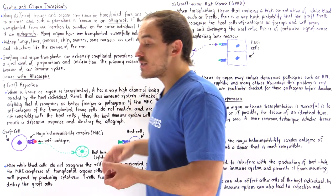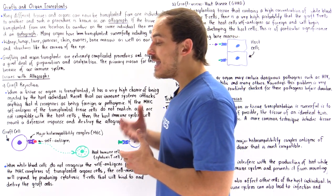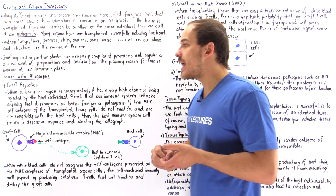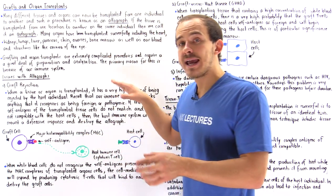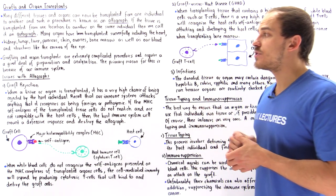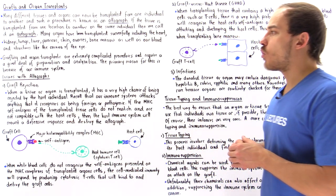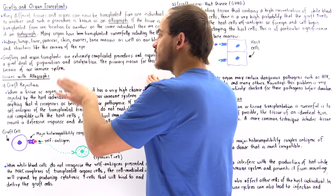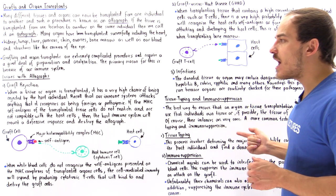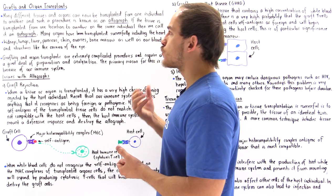Grafting and organ transplantation is a very complicated process requiring a great amount of precision, analysis, and preparation. The primary source of these complications is the immune system of the host individual accepting the graft or organ. The major issues include graft rejection, graft versus host disease, and infections, along with methods to address these complications.